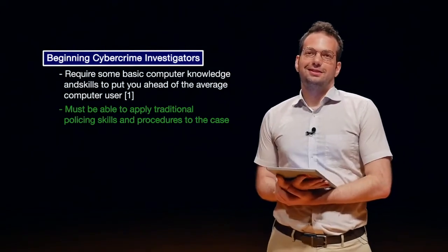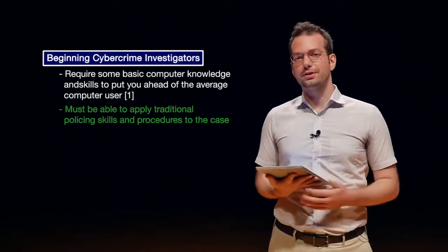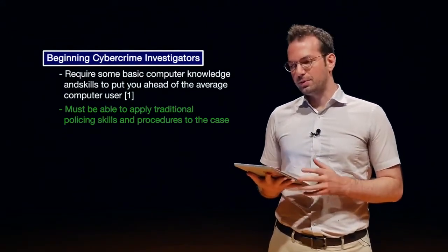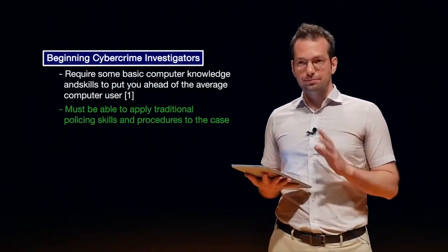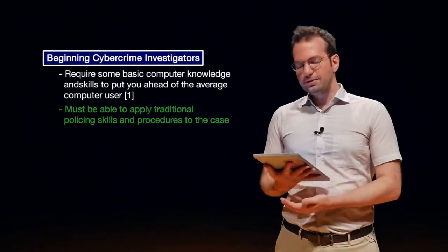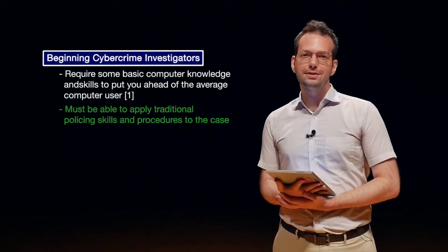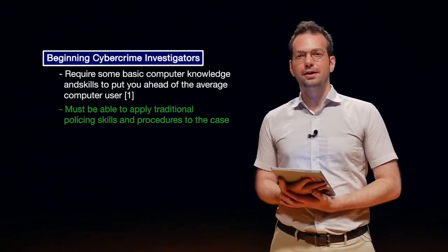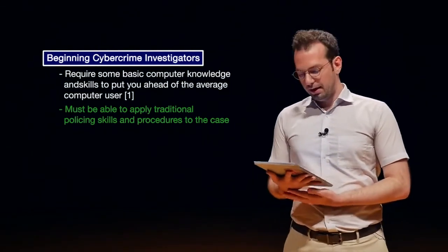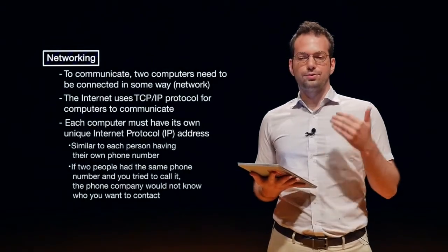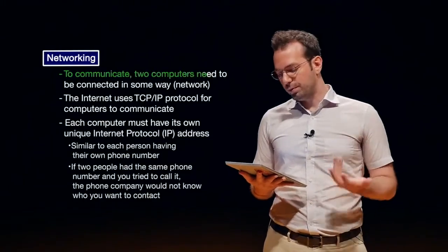That's really what you need to be an investigator, and we'll talk more about each of those areas in this course, specifically on how to do the investigation process this week. What I want to talk about now is how do we actually find people online? If somebody commits a crime or we suspect somebody of committing a crime, how do we track them down and find out who they are and what they were doing? This comes back to how do computers or devices online communicate with each other — two computers need to be connected in some way.